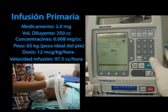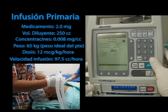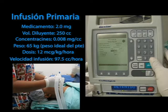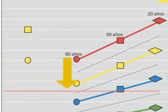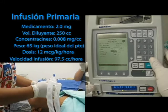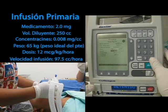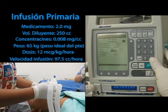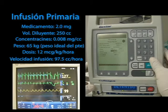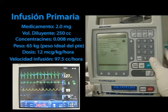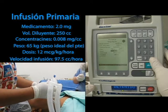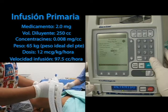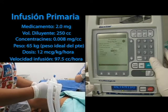The first step is to set up the primary infusion in the pump, which corresponds to the maintenance infusion. A plasma concentration of 4 nanograms per milliliter is needed, which according to the Tafur Nomogram corresponds to an infusion of 12 micrograms per kilogram per hour for an 18–20 year old patient. Parameters: medication 2.0 milligrams, diluent volume 250 cc, concentration 0.008 milligrams per cc, weight 65 kilograms, dose 12 micrograms per kilogram per hour, infusion rate 97.5 cc per hour.